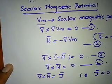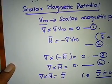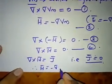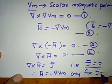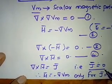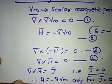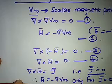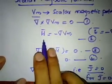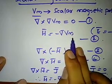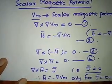Therefore, the scalar magnetic potential Vm is valid only under the condition that J-bar equals zero. We have H-bar equals minus del Vm only when J-bar equals zero. This was derived under the assumption that H-bar equals minus del Vm, which requires del cross H-bar equals zero, and therefore J-bar equals zero.